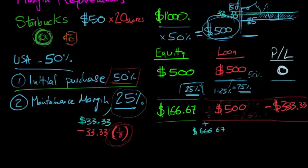So initial margin: $500 equity, $500 loan, profit and loss zero. Maximum drawdown to a maintenance margin level of 25% is a loss of $333.33. Your loan amount is still $500, your equity is $166.67, and the total value of the position is $666.67.